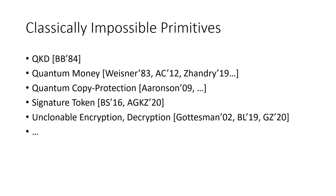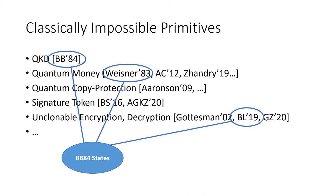These applications rely on some forms of non-cloning theorems of particular quantum states. Although a general unknown quantum state cannot be copied, to establish a provable statement for a certain cryptographic scheme, we rely on particular quantum states instead of general unknown states. Most of the applications are based on BB84 states, first used by Wiesner, or subspace states, first used by Aaronson and Christiano.